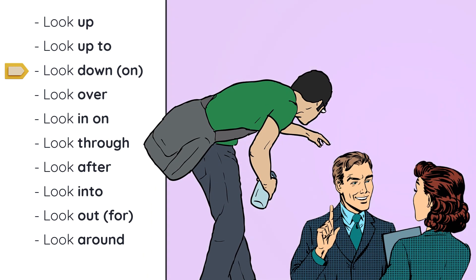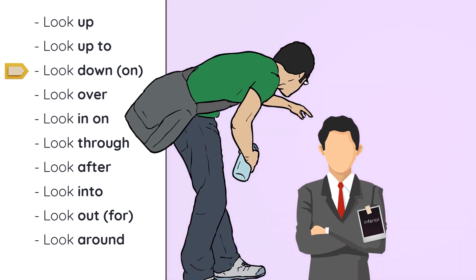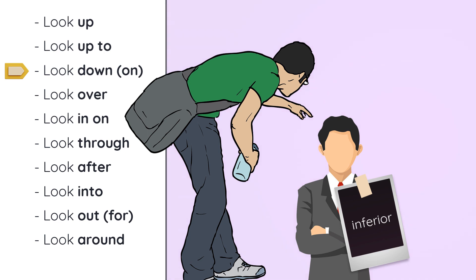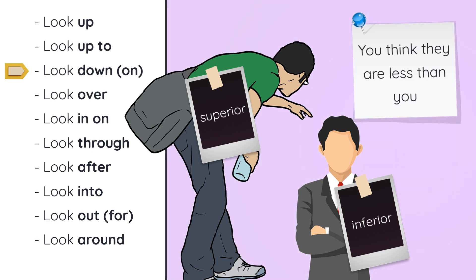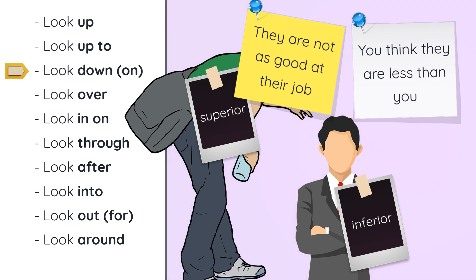Look down. I'm not saying you're going to look down on your parents. But when you look down on somebody, you're putting them beneath you. You're making them a little bit inferior. The opposite of inferior is superior. If you look down on somebody, it means you think they're less than you — not as good at their job, not as good a baseball player. You're a better student than they are, so you look down on them.